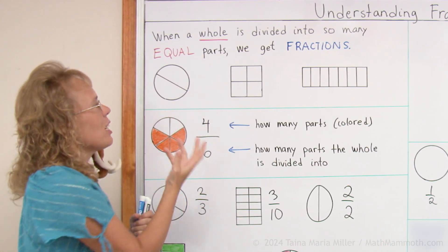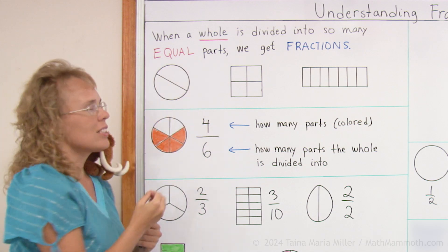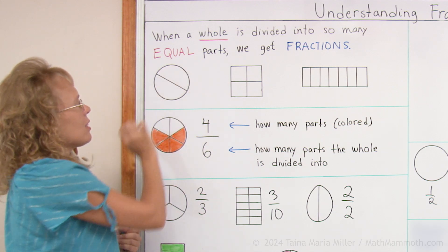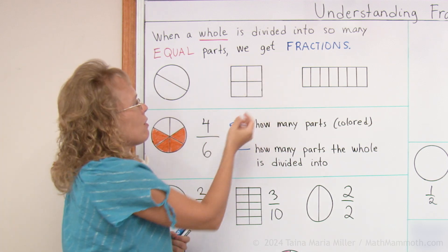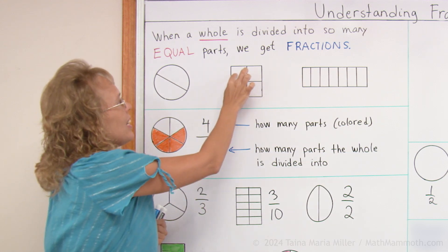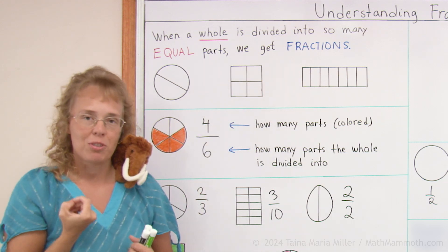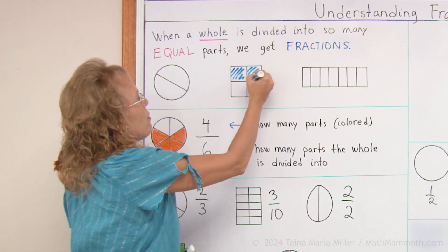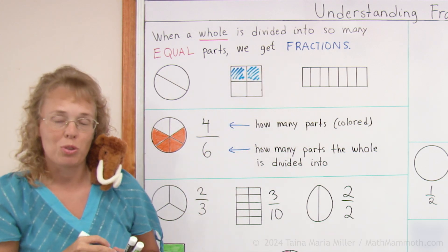For example, I have some shapes here. There's a circle that's divided into two equal parts, right? And so each part is one half. If I have a square here that's divided into four equal parts, then each part is one fourth. We could take maybe two of those parts, we could take two fourths of it.